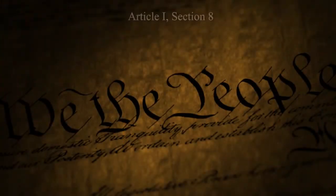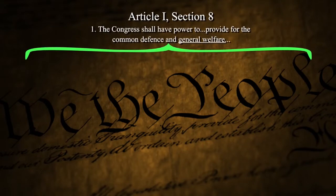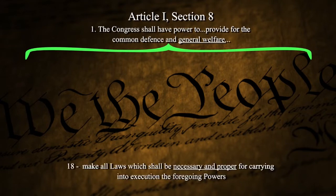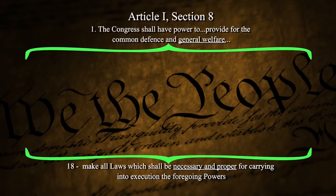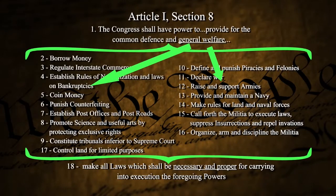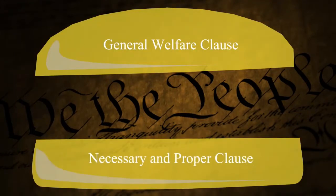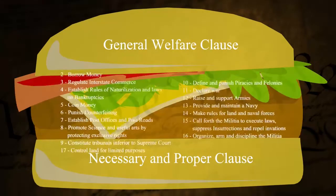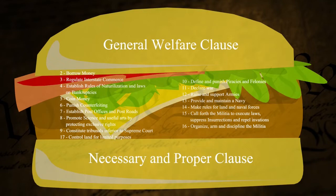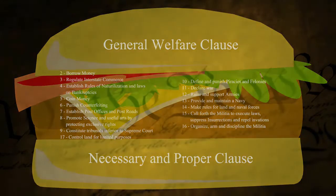Now let's look at Article 1, Section 8 in a visual way. Clause 1 at the top is your General Welfare Clause. Clause 18 at the bottom is your Necessary and Proper Clause. Everything in between is the listed delegated powers that both clauses refer to. It's kind of like a sandwich: top piece of bread is the General Welfare Clause, bottom piece is the Necessary and Proper Clause, and all the meat in the middle is the listed powers.